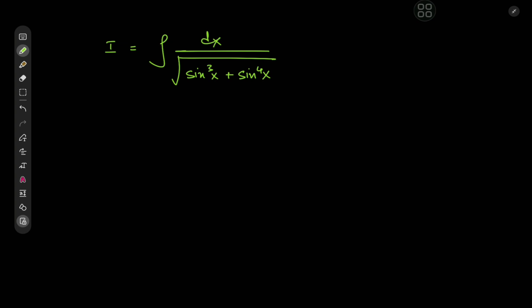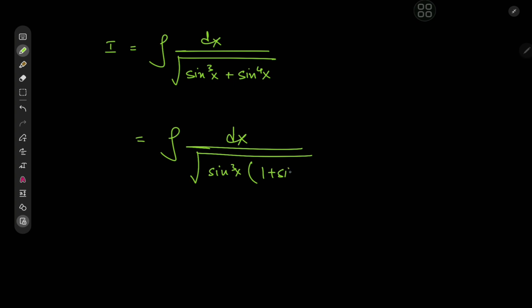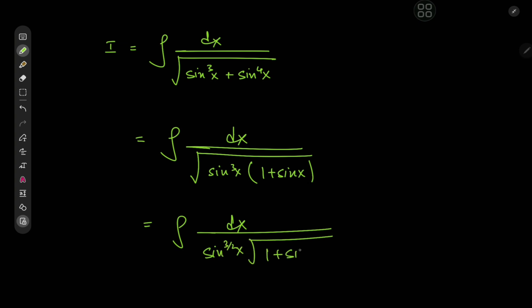So we have the integral of dx divided by the square root of sin³x plus sin⁴x. The first thing we can do is factor out sin³x from the argument of the square root in the denominator. So we have the integral of dx divided by √(sin³x · (1 + sin x)), which gives us the integral of dx divided by sin^(3/2)(x) times √(1 + sin x).